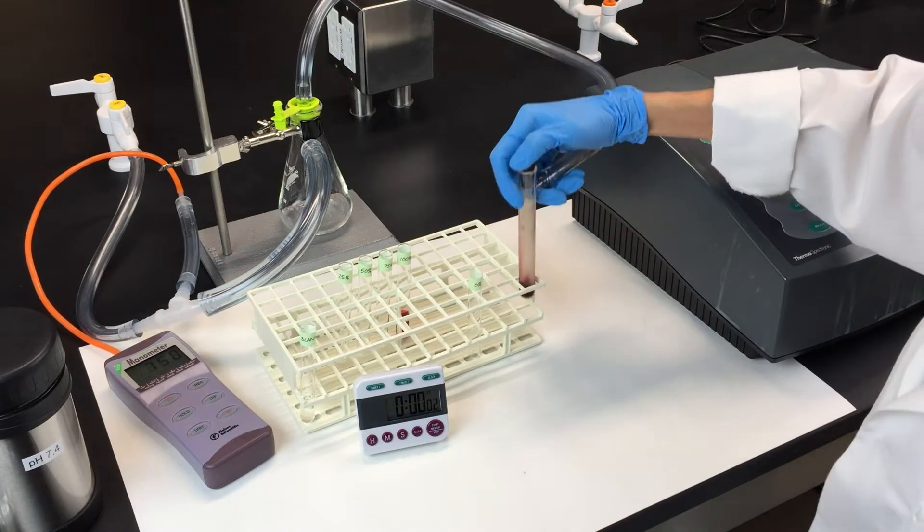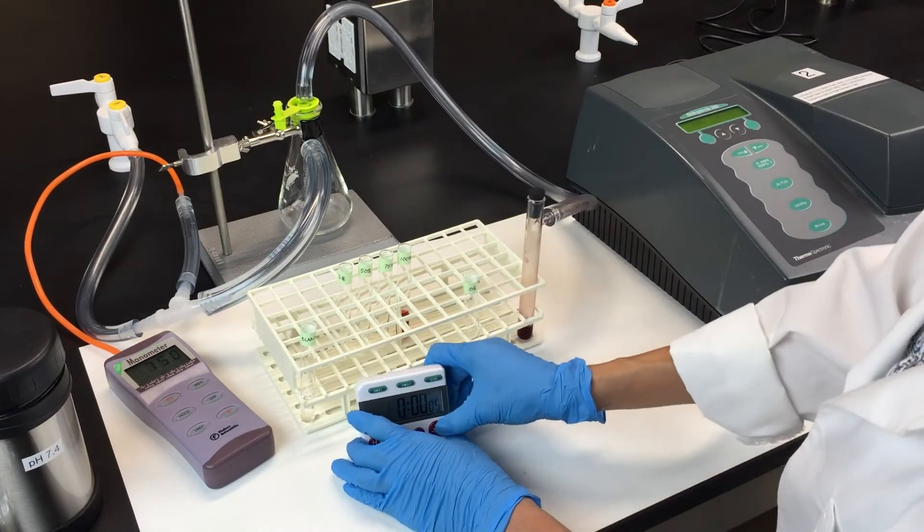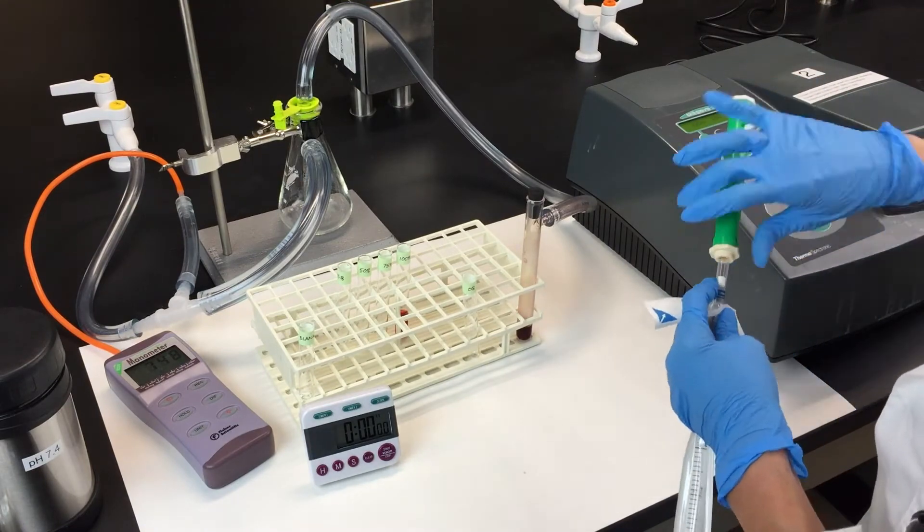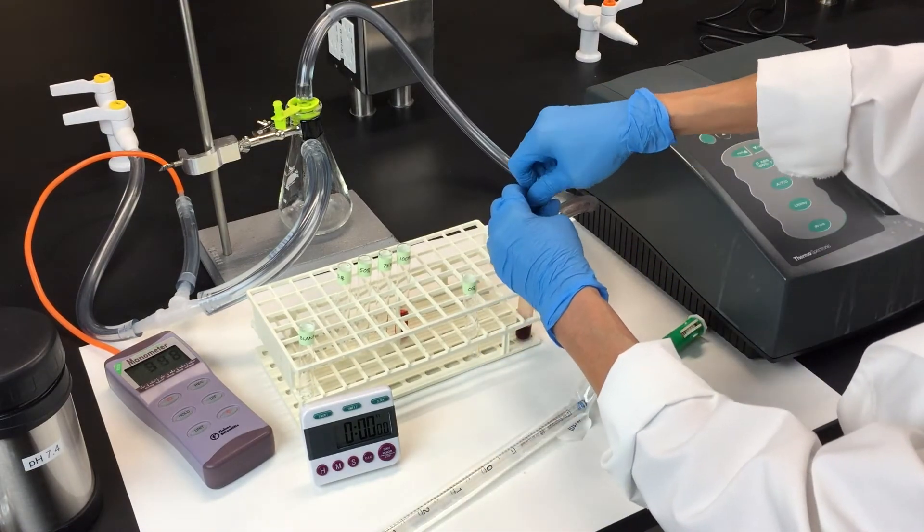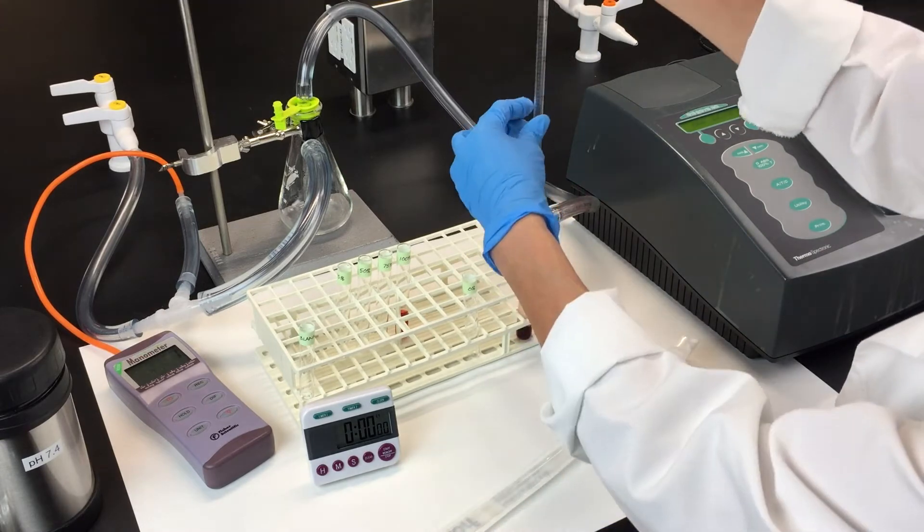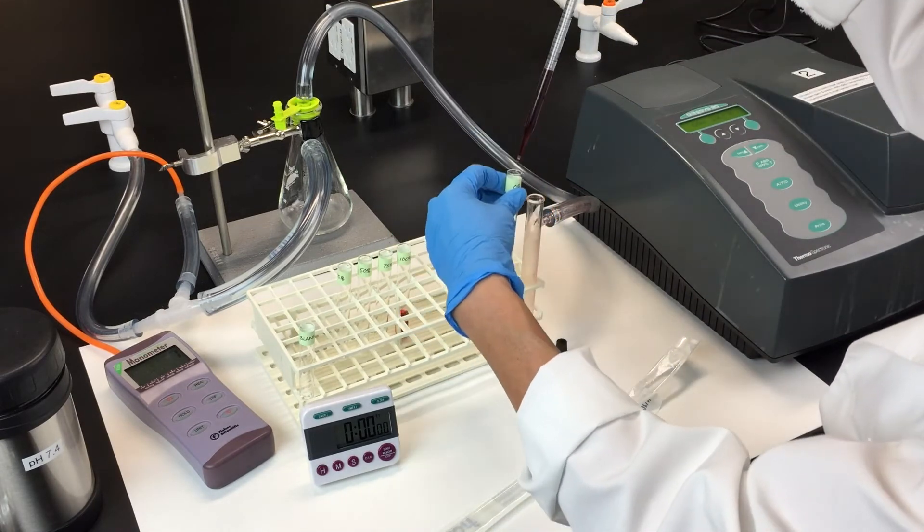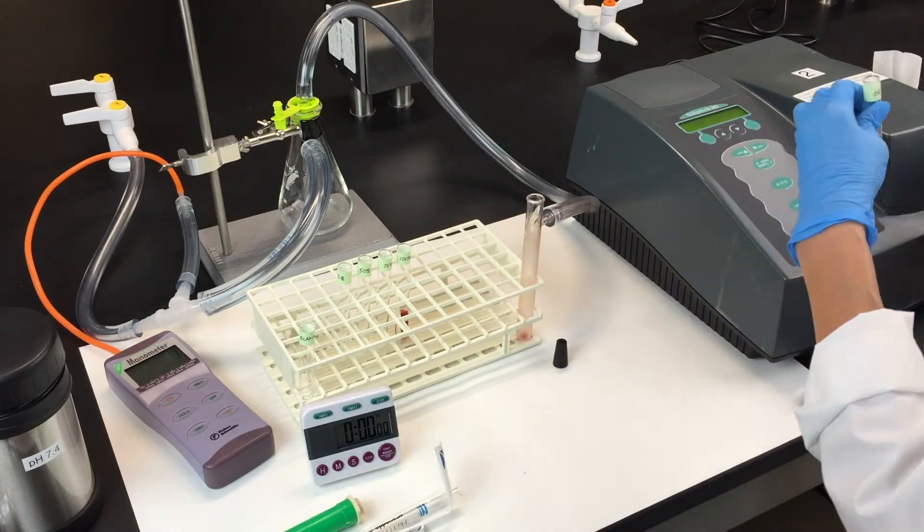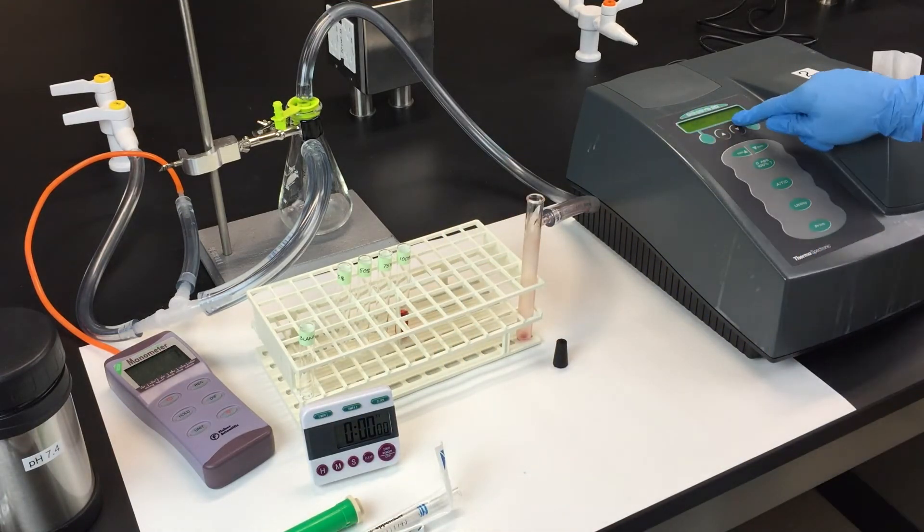After five minutes, the hemolysate should be fully deoxygenated. Turn off the vacuum and transfer the contents to the 0% oxygenation tube. Wipe off the tube, place it in the spectrophotometer, and take the reading.